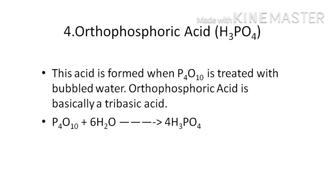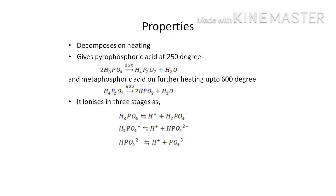The fourth oxoacid is orthophosphoric acid, H₃PO₄, the best known oxoacid of phosphorus, commonly known as phosphoric acid. It is prepared by treating phosphorus pentoxide with water. 85% concentrated phosphoric acid is a clear syrupy liquid which, on removal of water at low temperature in vacuum, yields six-sided prismatic crystals. It decomposes on heating, giving pyrophosphoric acid at 250°C and metaphosphoric acid at higher temperature, about 600°C. It is a tribasic acid and ionizes in three stages.